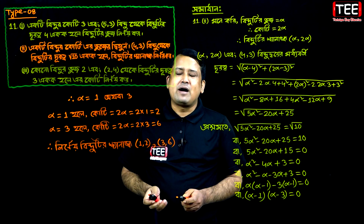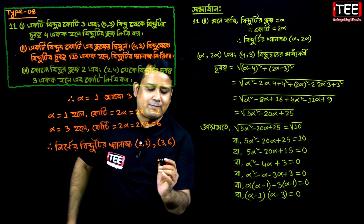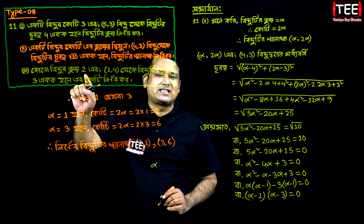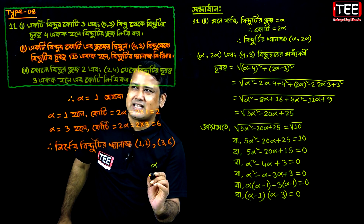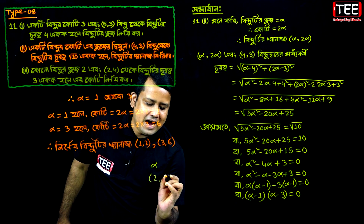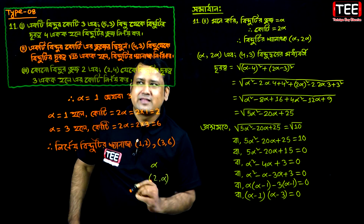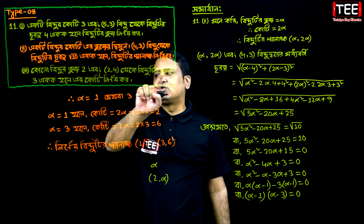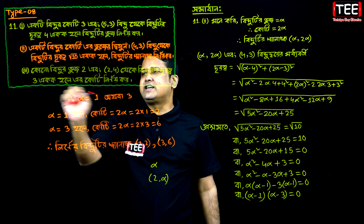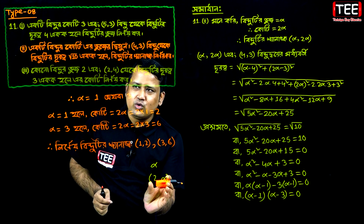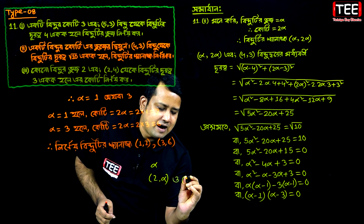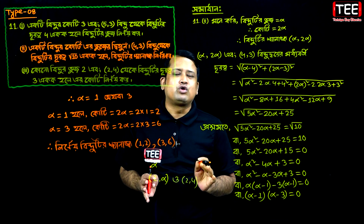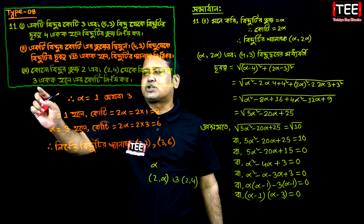We have 2. We call 2, and we call 2. What does this mean? This means 2, alpha. We call 2, alpha. We call 2, alpha. It is equal to 3.